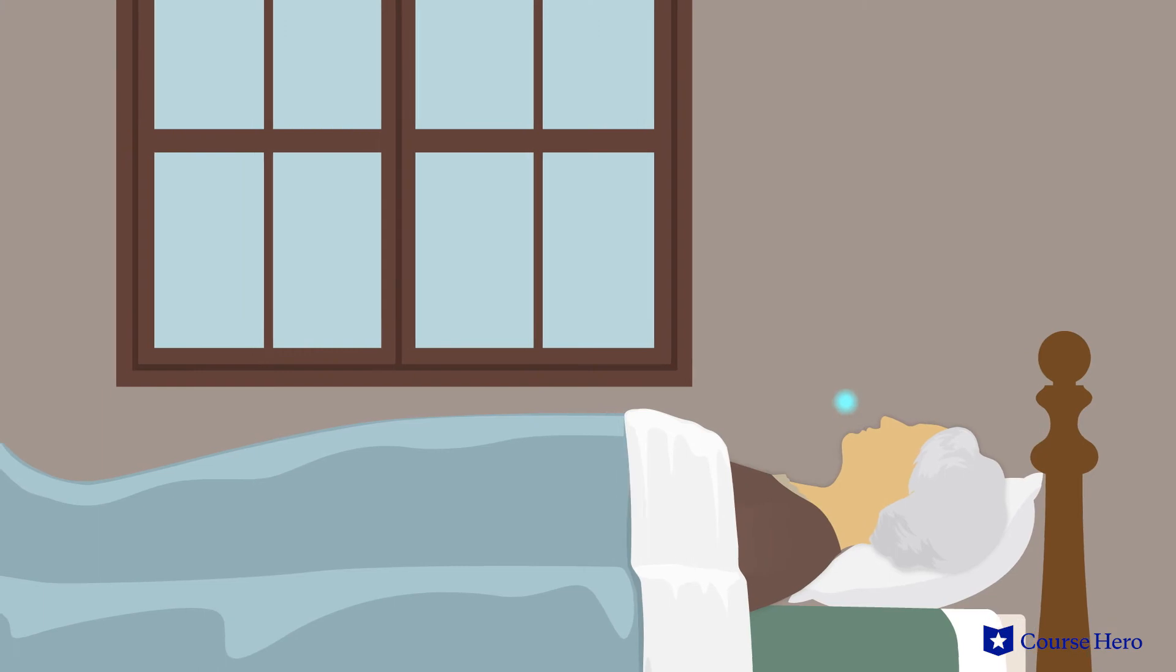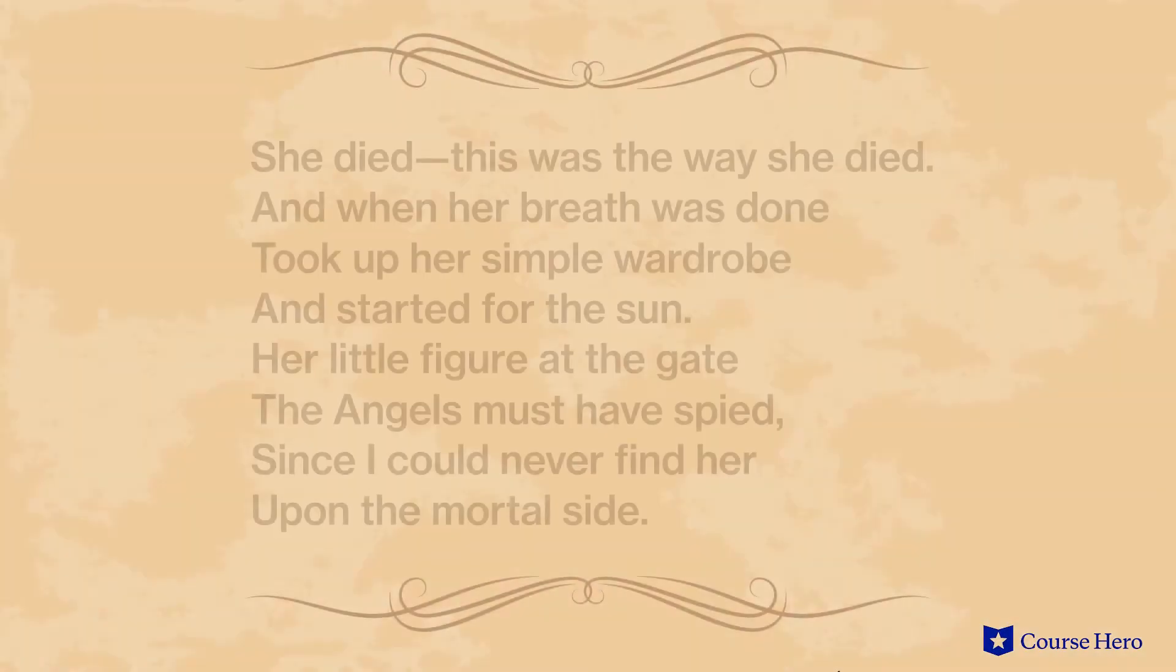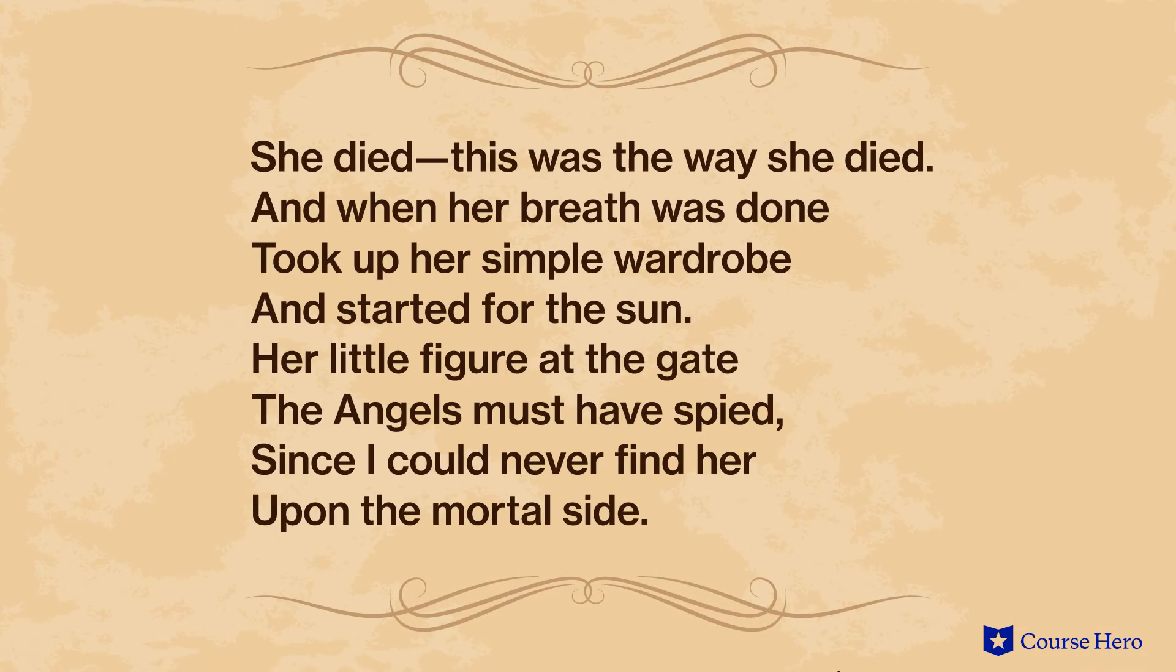In Emily Dickinson's poem, She Died, this was the way she died, the speaker describes a woman's death. After she stops breathing, the woman then takes her wardrobe and heads toward the sun.